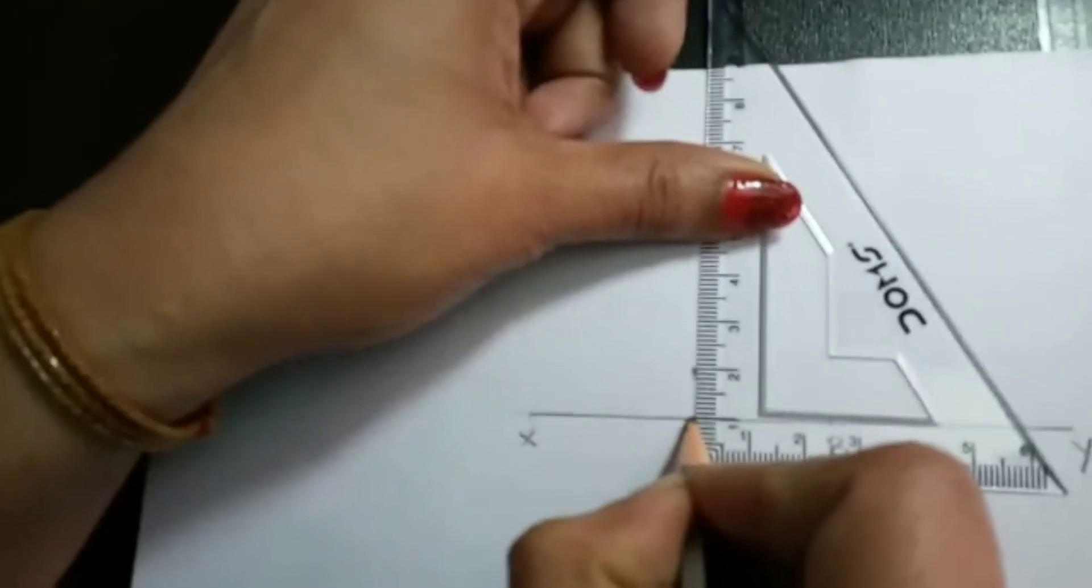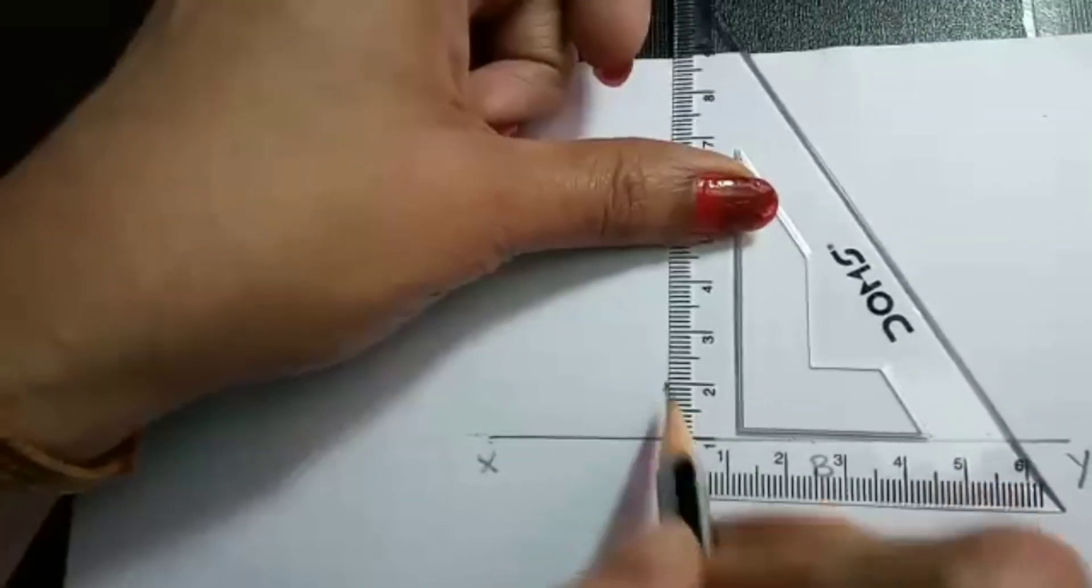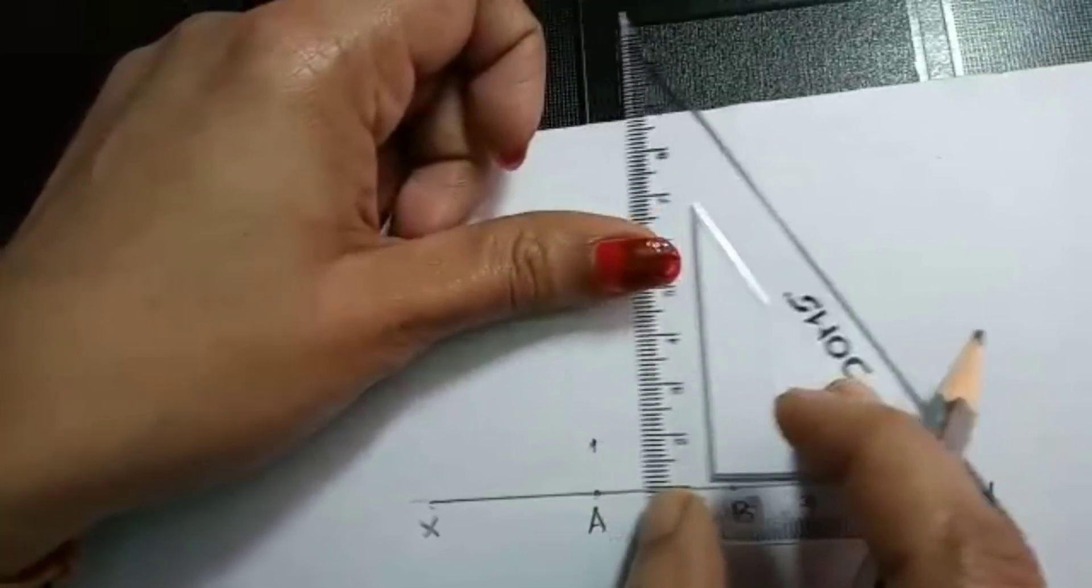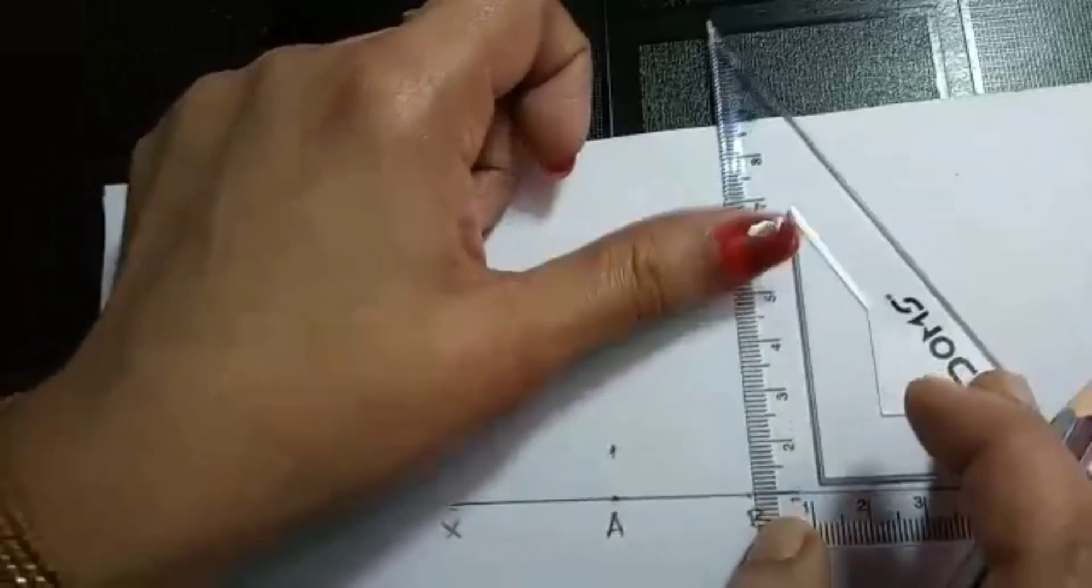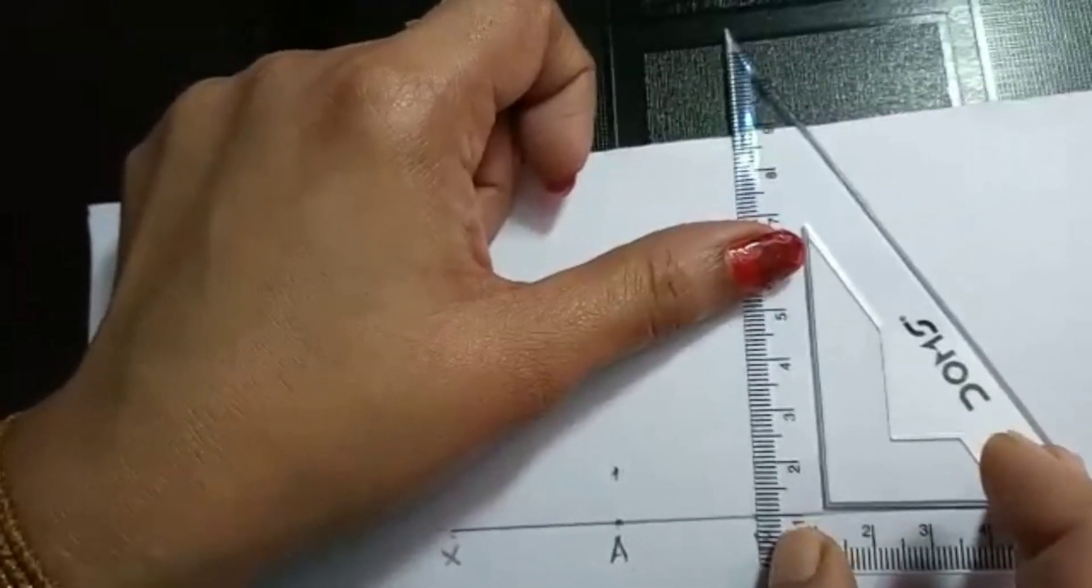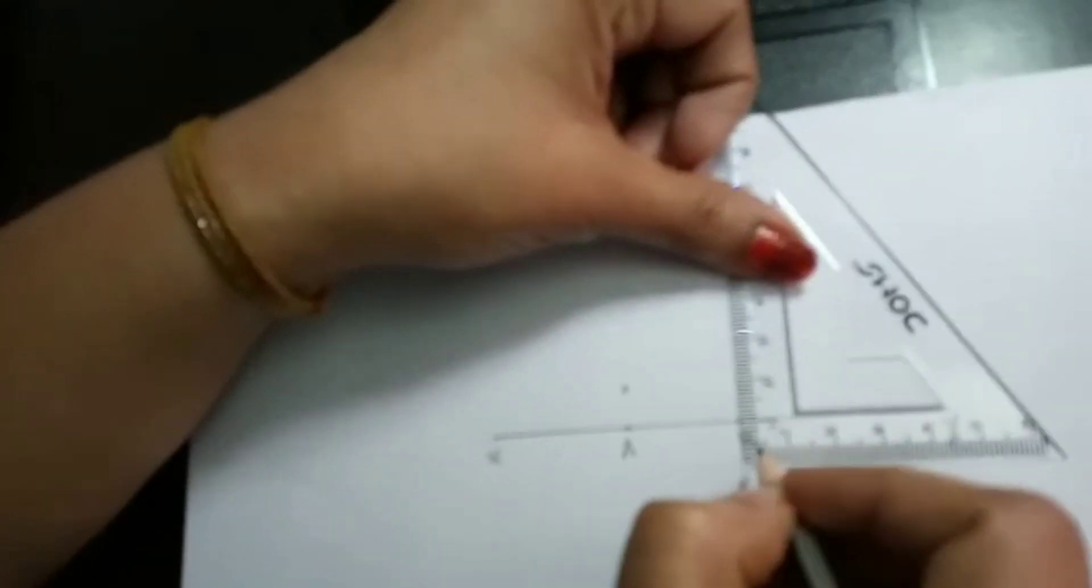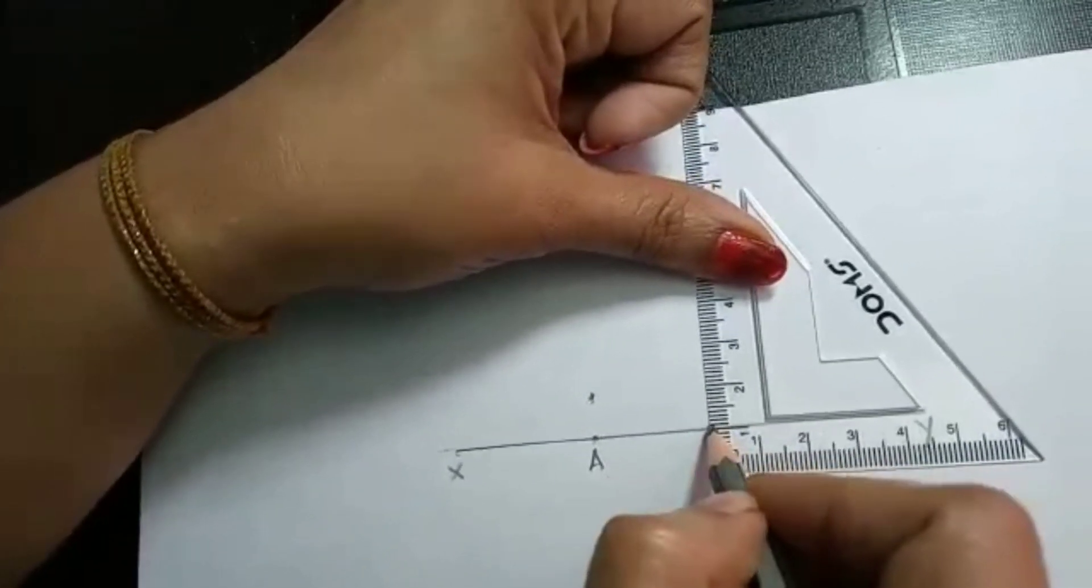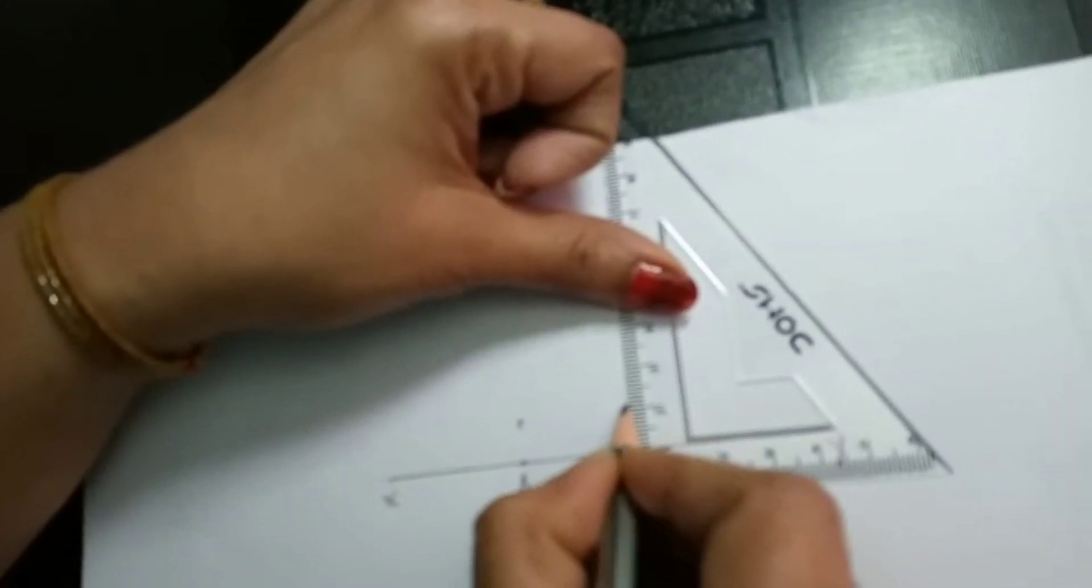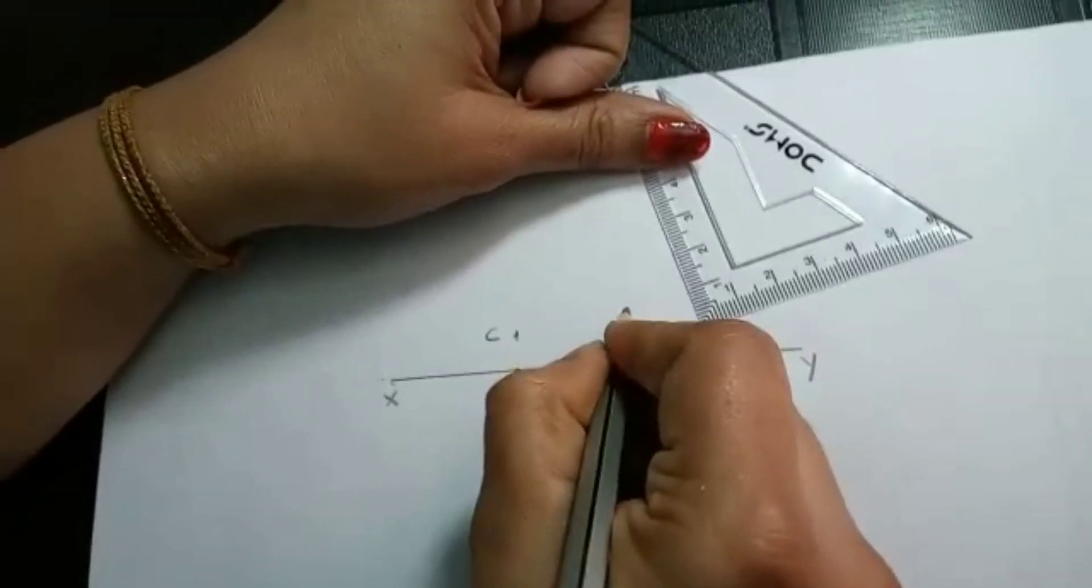So here this is 1 and this is 2. So this is 1 cm. This makes 1 cm. So I marked a point at 2 and just kept it as is. And here on my B, again I am just keeping my 1. It should be fixed. It should not slip. So here again you can just count 1 cm. Just mark the point. So this is my point C and this is my point D.